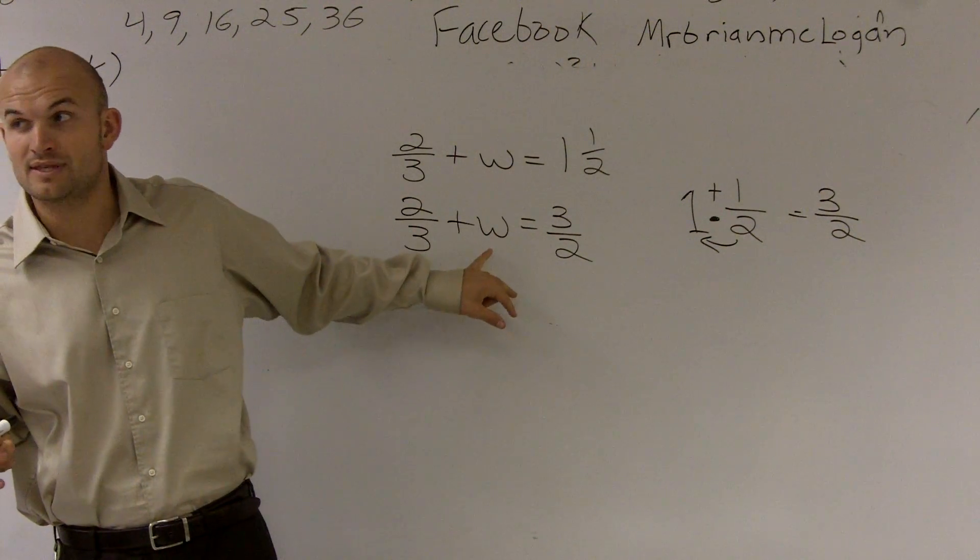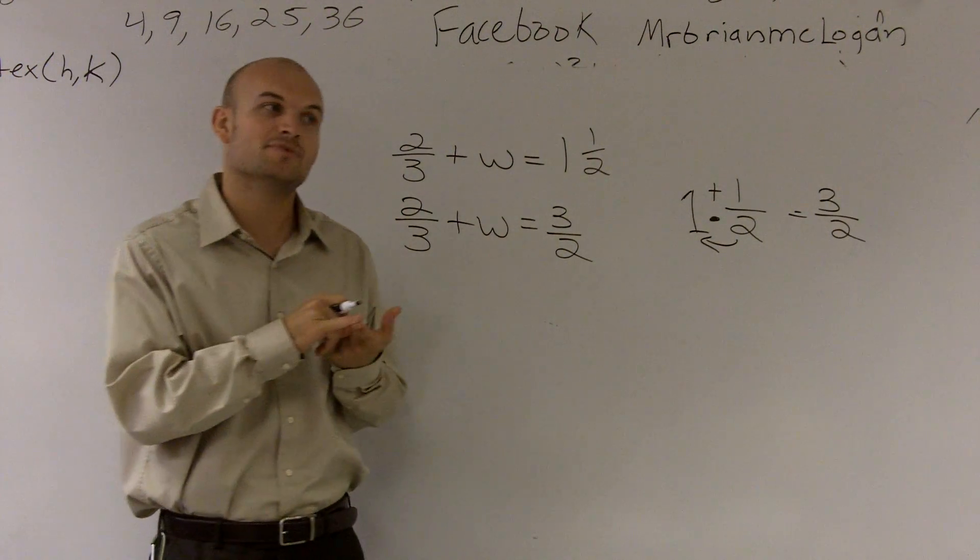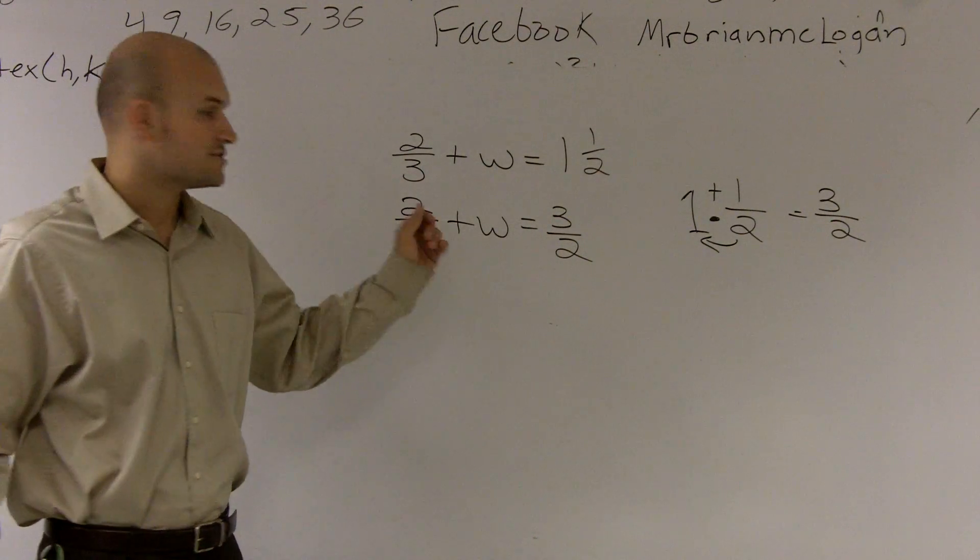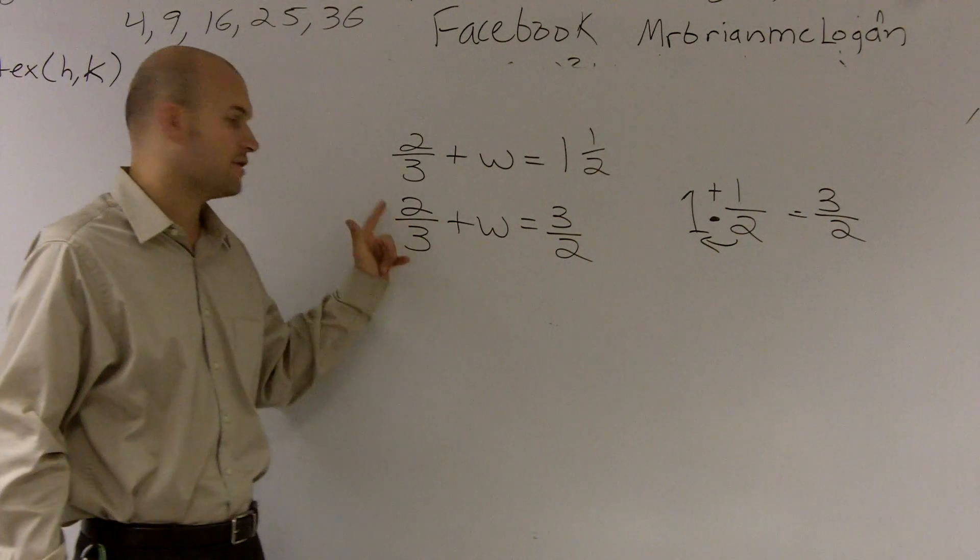Right? My variable is my w in this case. So I need to determine what's happening to my variable. And I can notice I have an addition sign, so I'm using addition. So I'm actually adding to my variable 2 thirds.